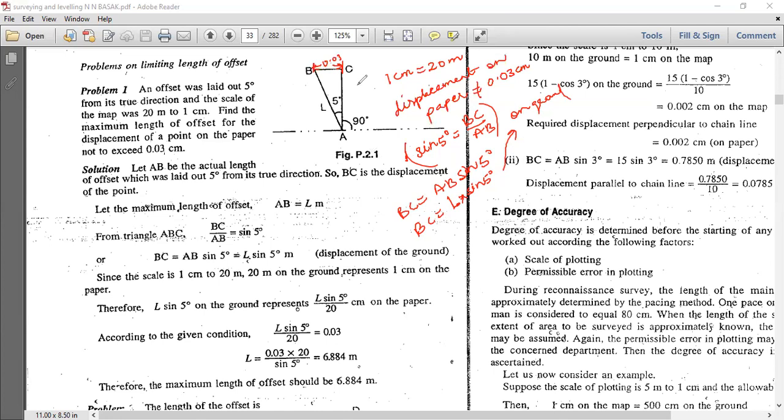You have to divide this in paper and find this in paper, so you have to divide this into 20. How much is the BC maximum? 0.03 BC maximum.